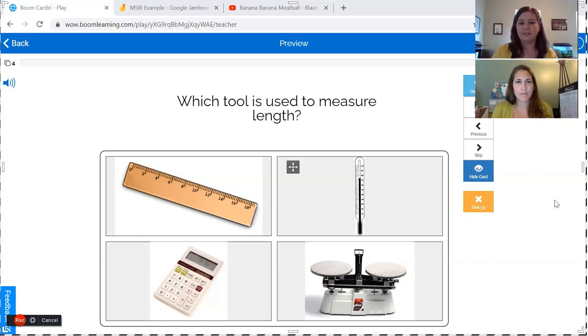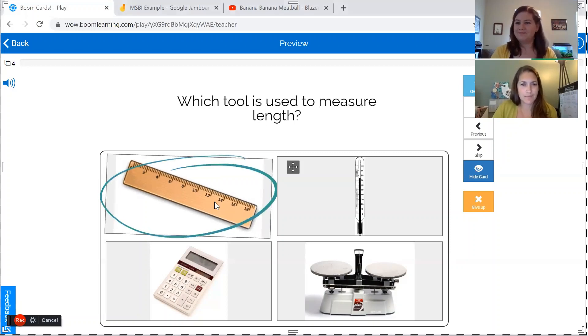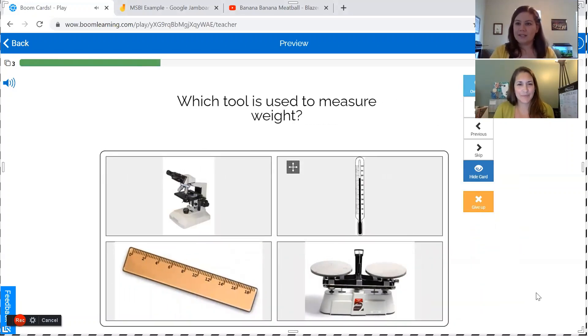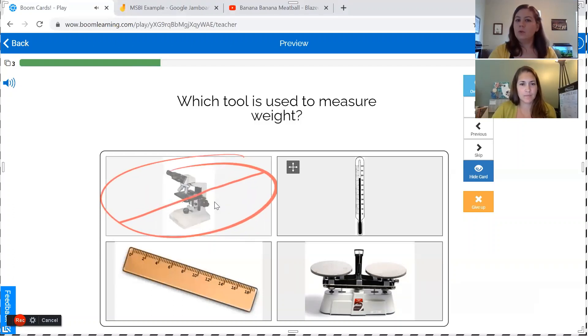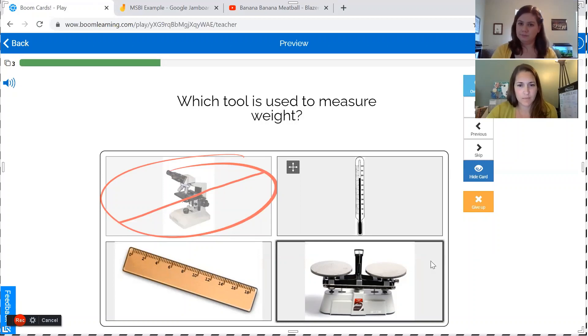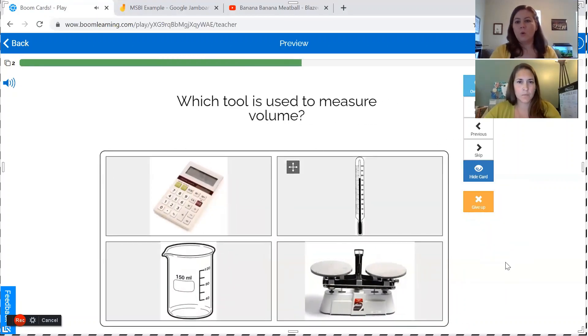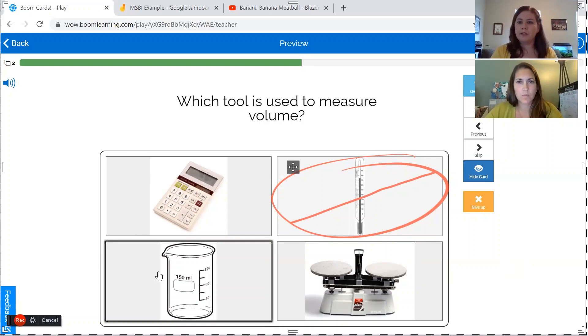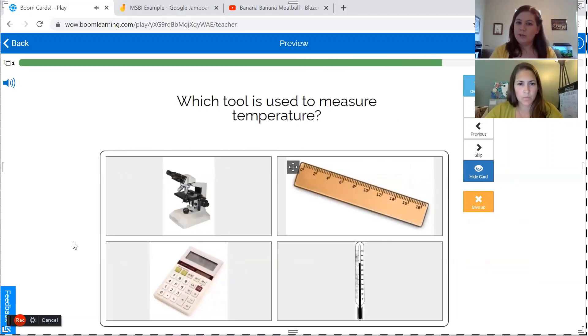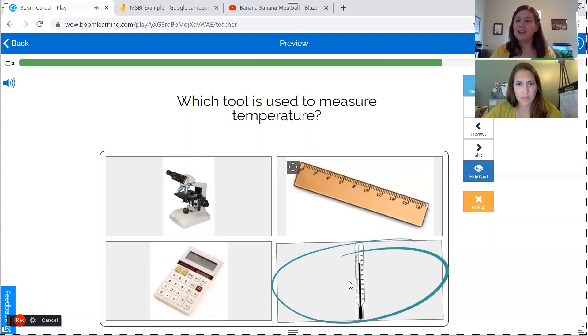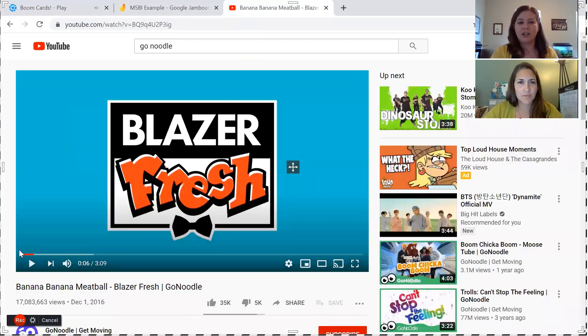Which tool is used to measure length? Ruler. Ruler. Ruler. Which tool is used to measure weight? Which tool is used to measure weight? Balance scale. Balance scale. Which tool is used to measure volume? Beaker. Beaker. Which tool is used to measure temperature? Thermometer. Great job, Melissa. Thermometer. Let's watch a GoNoodle video.